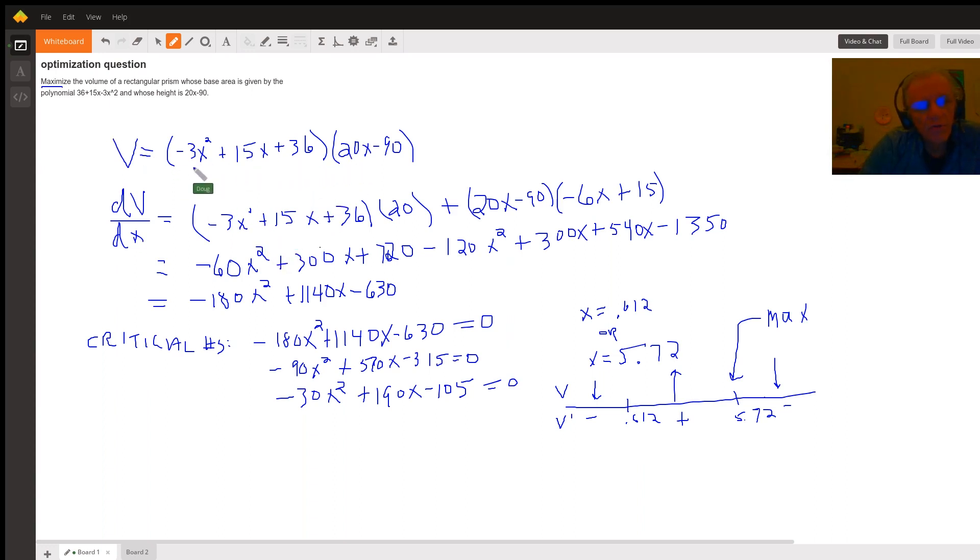You could multiply these two polynomials together and then take the derivative term by term, or you could use the product rule, which is what I've chosen to do here. So that's the first function times the derivative of the second, derivative of the second is 20, plus the second function times the derivative of the first, which is negative 6x plus 15.